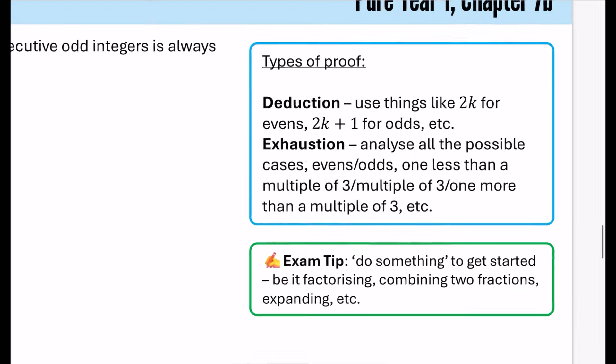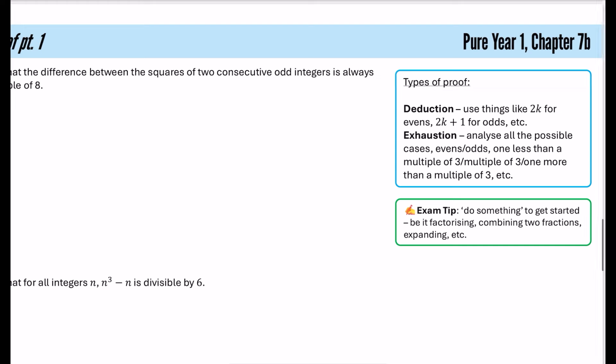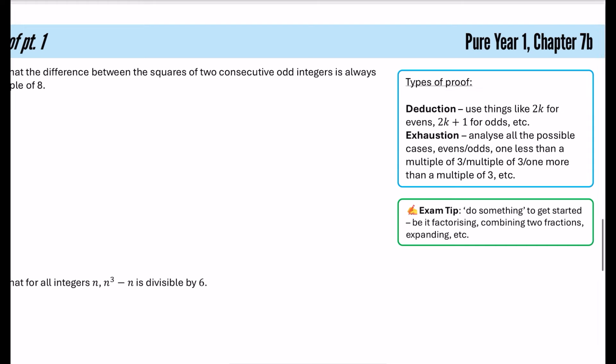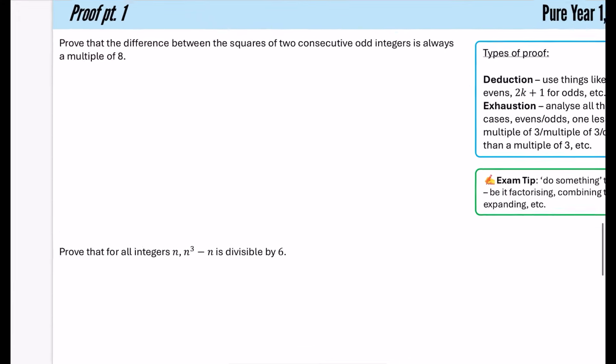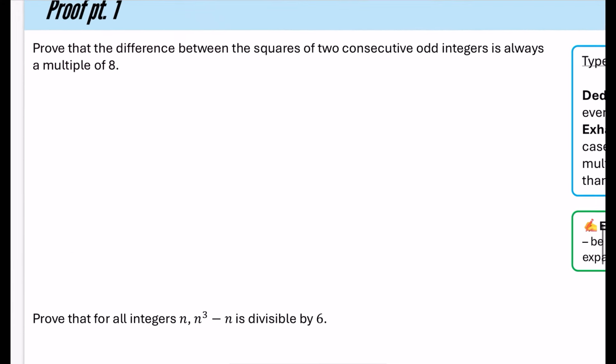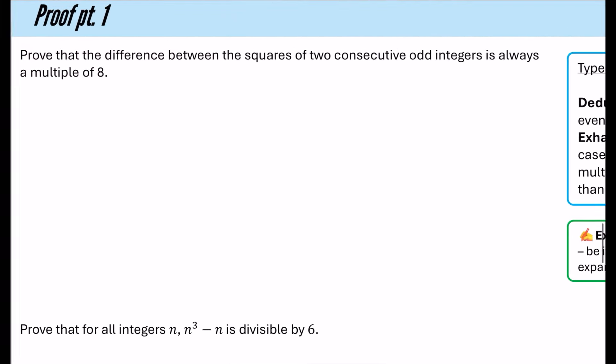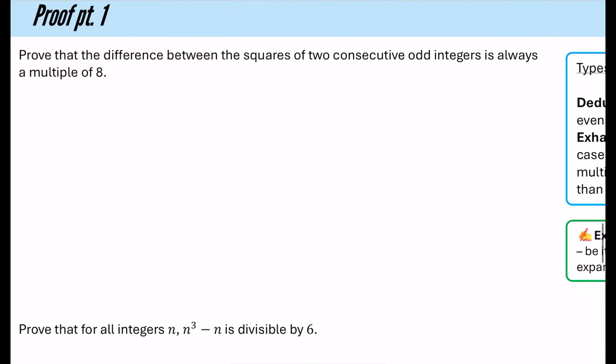These are probably the two most common groupings we would come across. And this exam tip — which we'll probably use in the second example — is just to do something to get started. If you can't figure out where to begin, do something, and it will usually give you some kind of signal about what it might be connected to.